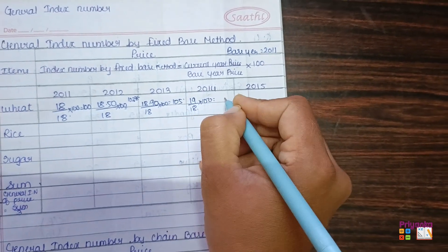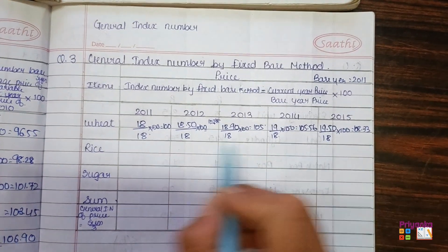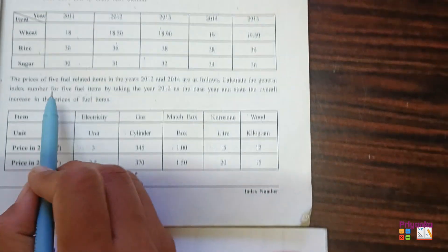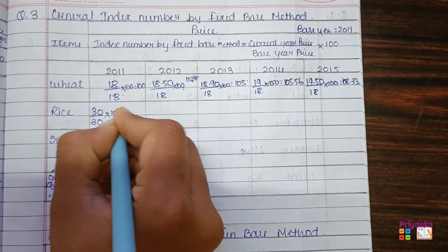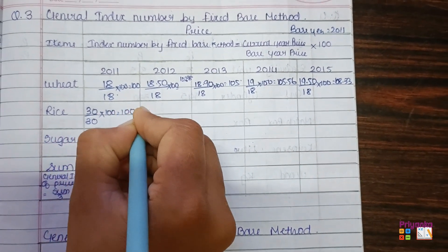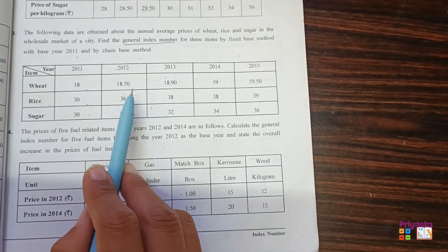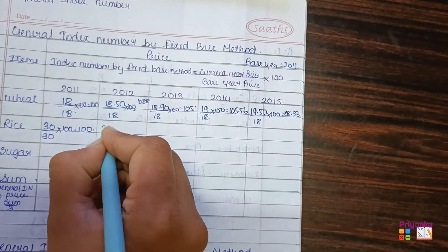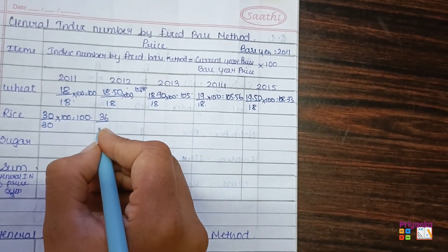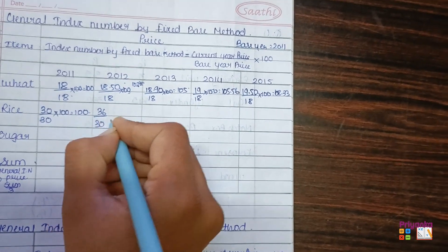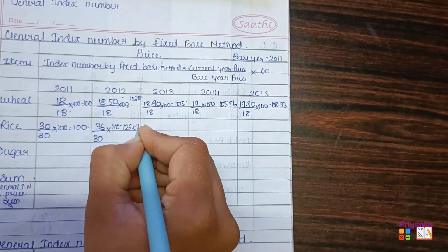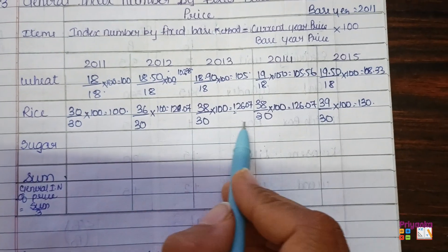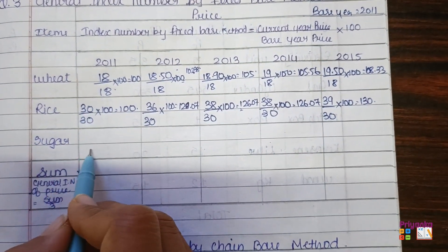Now we do the same for rice. The rice value in 2011 is 30, and the base year is also 30, so 30 divided by 30 multiplied by 100 gives 100. For 2012, the rice value is 36 divided by the base year 2011 value of 30, multiplied by 100, giving 120. We continue for the remaining years to complete the rice index numbers.